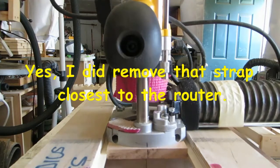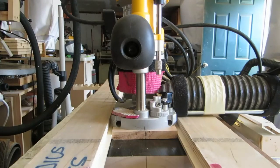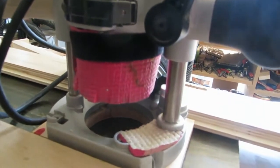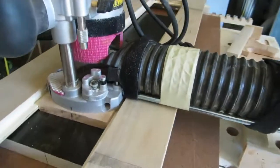I took an old yoga mat, and I made a piece that goes around the bit area, and that is for dust collection when I press it down. The other thing is, they're all held on by Velcro.